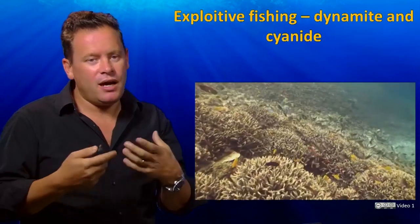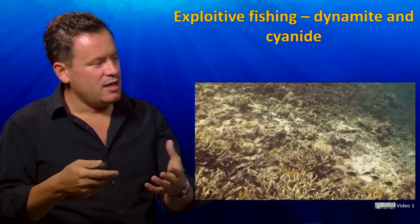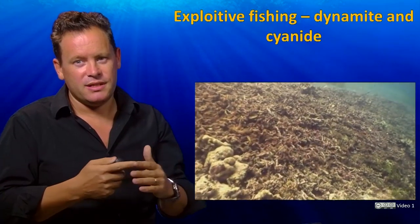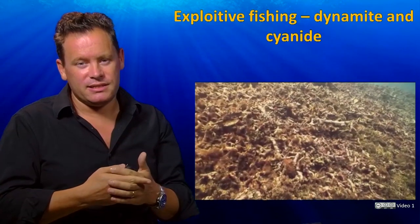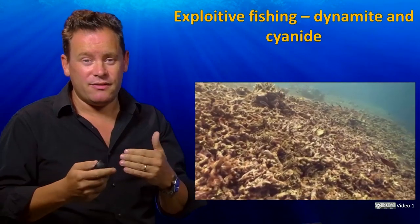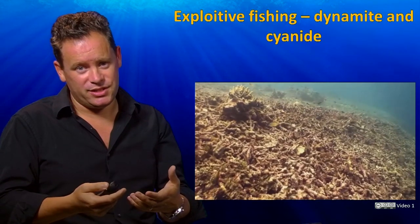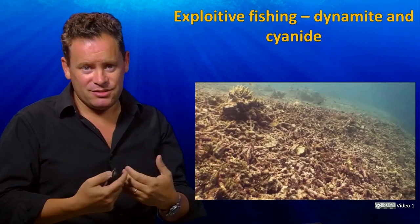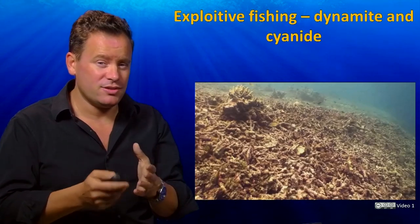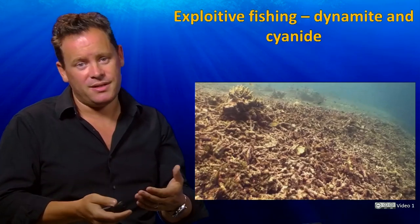Fisheries have other impacts on ecosystems too. The most extreme example is dynamite fishing. Here we can see a relatively healthy area of coral reef with fish amongst the coral heads and staghorn coral, contrasted with an area of reef in Indonesia that's been dynamited, leaving just a pile of rubble with very few fish. This type of fishing happens when people are desperate to catch fish. It's very dangerous to those doing it and has a very persistent negative effect on the ecosystem — it takes a long time for a reef to recover. Unfortunately, it's rife in some parts of the world.